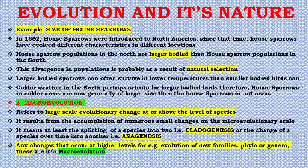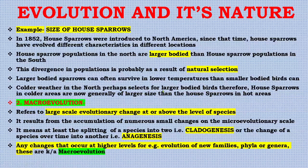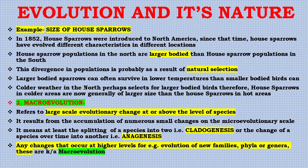This divergence in populations is probably a result of natural selection. Larger-bodied sparrows can often survive in lower temperatures than smaller-bodied birds, and colder weather in the north selects for larger-bodied birds. Therefore, house sparrows in colder areas are now generally of larger size than house sparrows in hot areas.